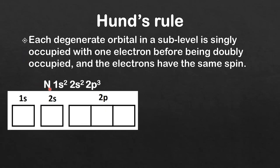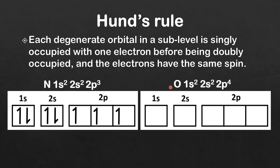This is nitrogen. The electronic configuration is 1s2, 2s2, 2p3. We start by filling the lowest energy orbital first — the 1s orbital — then the 2s orbital. Now we're on to the 2p sublevel. The three p orbitals in the 2p sublevel are degenerate, meaning they have the same energy. According to Hund's rule, each degenerate orbital is singly occupied before being doubly occupied, so we put one electron in each p orbital. All arrows point up, showing they have the same spin.